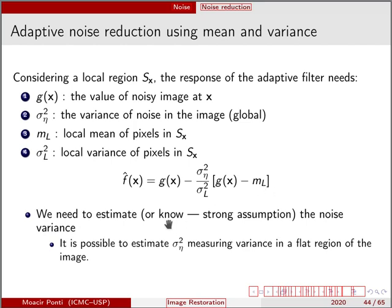So we need to estimate or know the noise variance. So I told you that this is not something trivial, could be not trivial. But I can estimate it by measuring the variance in a flat region of the image. As I told you before, we can study noise by looking at regions that should be flat in an image, but it is actually not. So by measuring, by just taking this flat region of the image, measuring the variance there, I can estimate sigma square for the global noise.